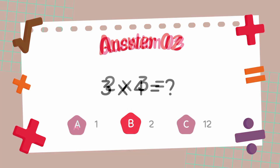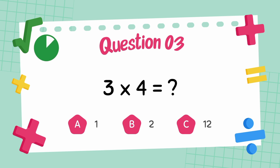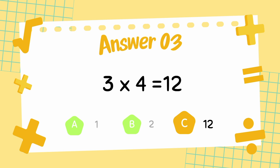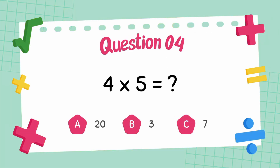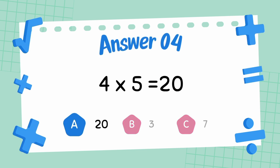What is 3 multiply 4? The answer is 12. What is 4 multiply 5? The answer is 20.